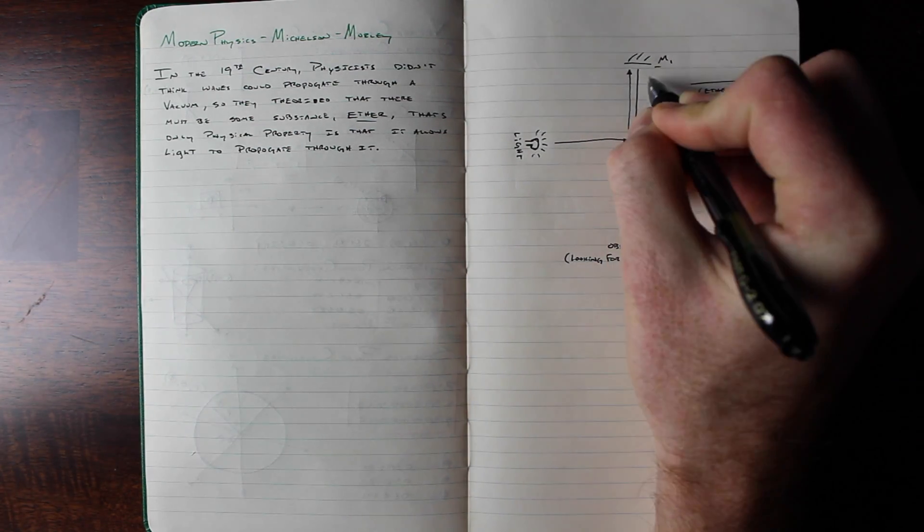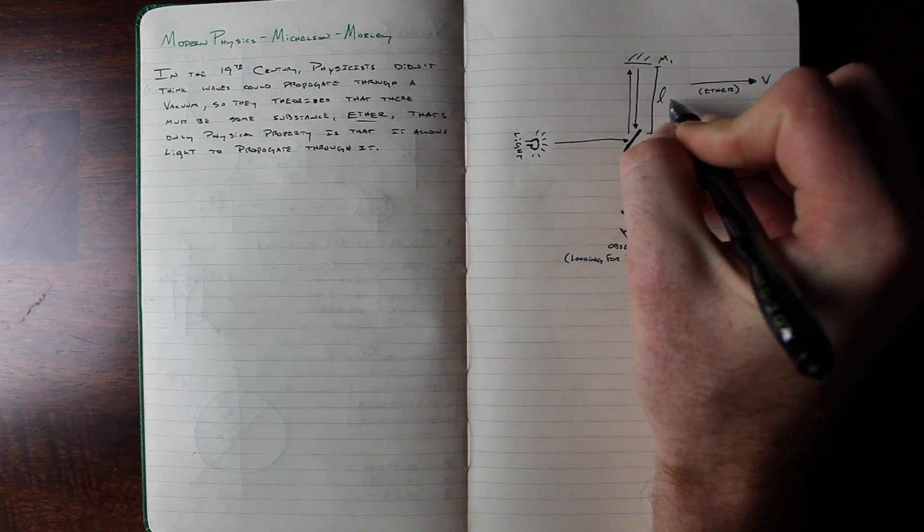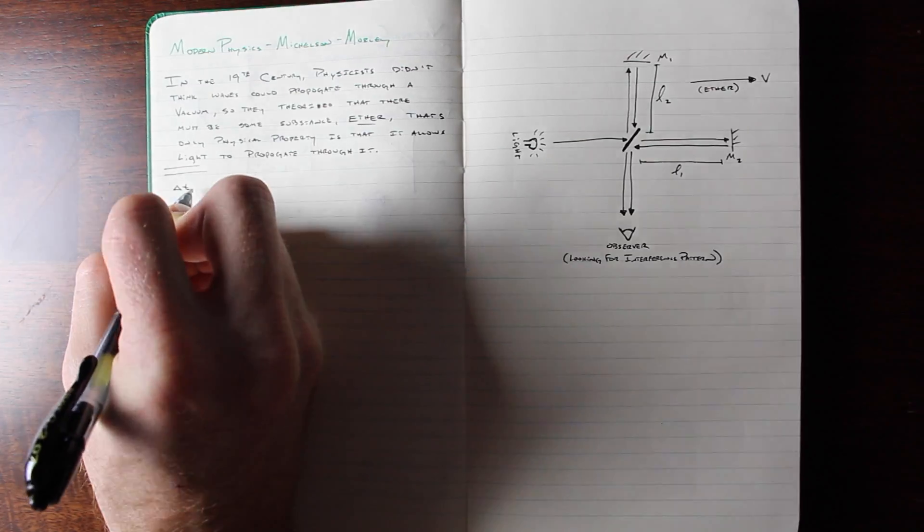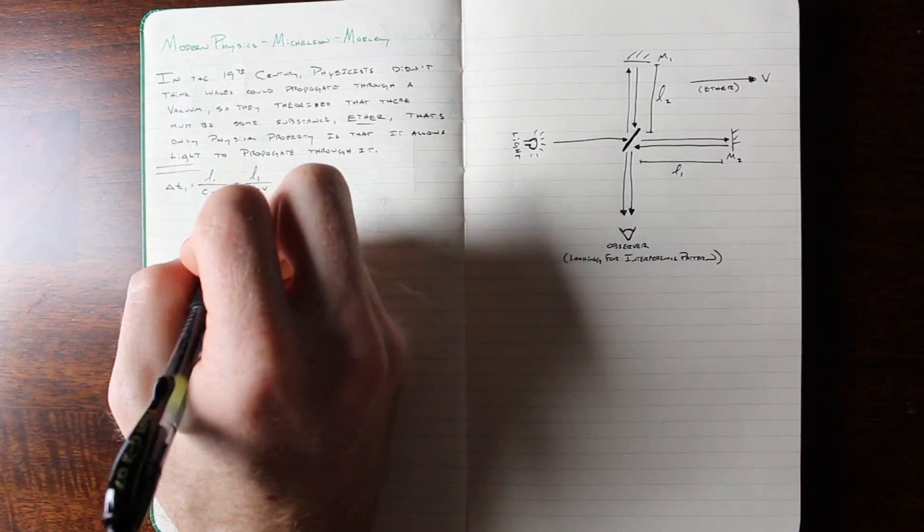Given the length between the half-silvered mirror and the other two mirrors, the time required by light to pass this distance can be calculated. The first time is affected only by adding and subtracting the velocity of the Earth.